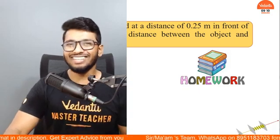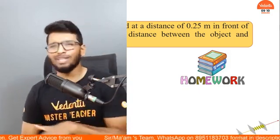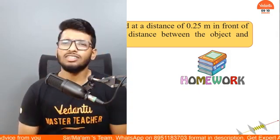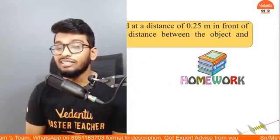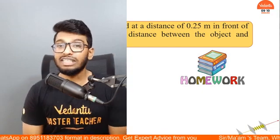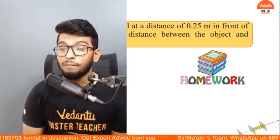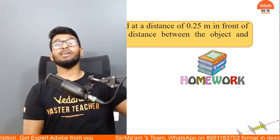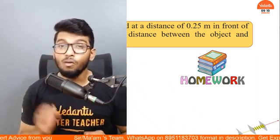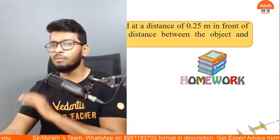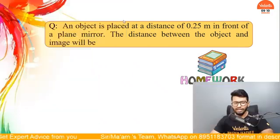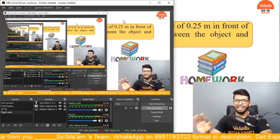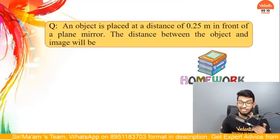But before we get into that, I had actually asked you a homework question in the previous session. This was the question — a fabulous question and I saw a lot of answers in the comment section. The question is: an object is placed at a distance of 0.25 meters in front of a plane mirror. What will be the distance between the object and the image?